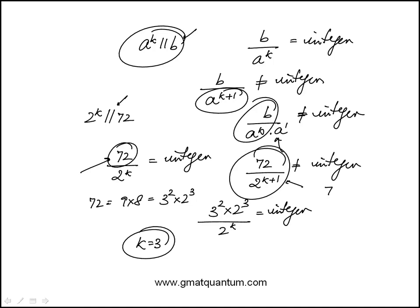And this would be 72 over 2 to the power of 4, which is not going to be an integer because there's only three 2s. So k is actually equal to 3, which is answer choice B.